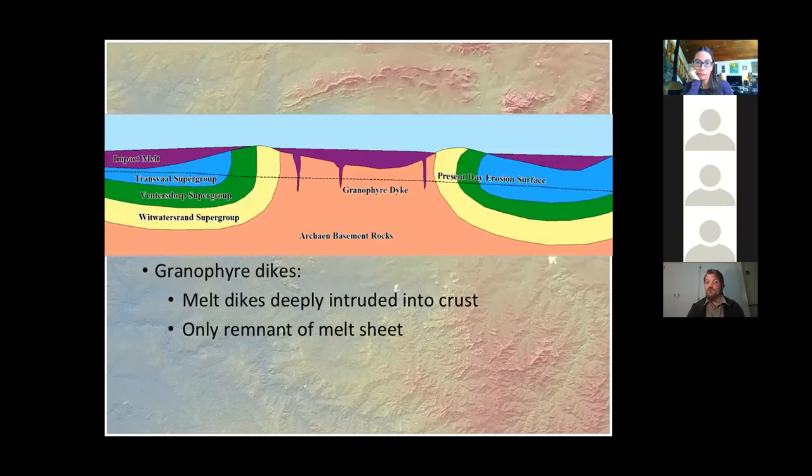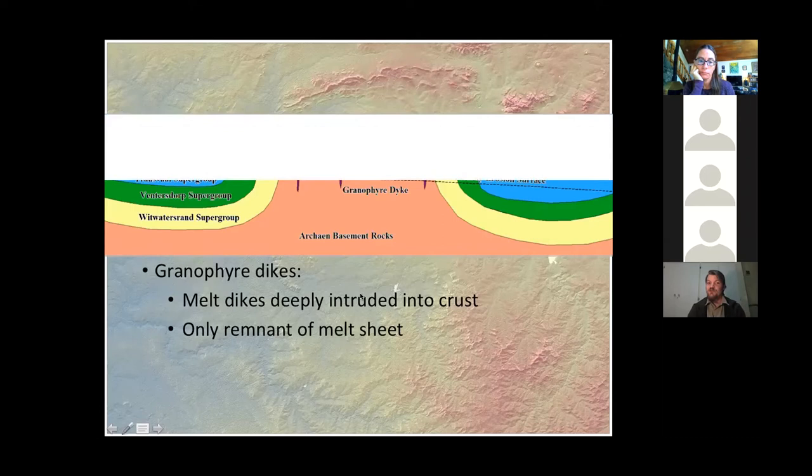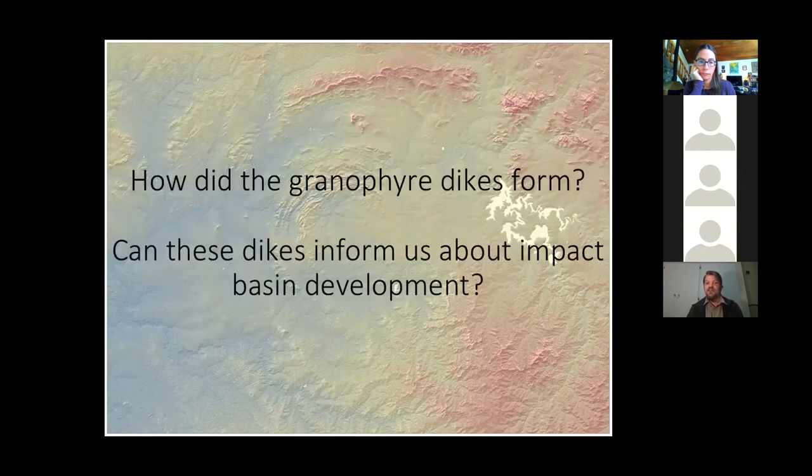When Vredefort first formed, it would have been an impact basin. The Archean basement rocks were uplifted so that these granites were brought near the surface, and a melt sheet would have formed across the top of the structure. After that melt sheet formed, we had these melt dikes penetrate down into the crust. After that happened, there was a little bit of erosion that took place, so that all we have left are these granophyre dikes. So we have to ask the question, how did these dikes form?